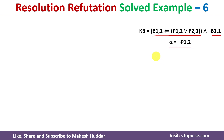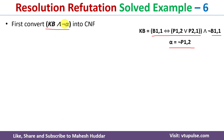To do this, first what we need to do is convert the knowledge base and negation of alpha into CNF. The meaning of this is: we will consider that the given conclusion is invalid and then start applying the unit resolution operator until we are able to prove that what we assumed is wrong.